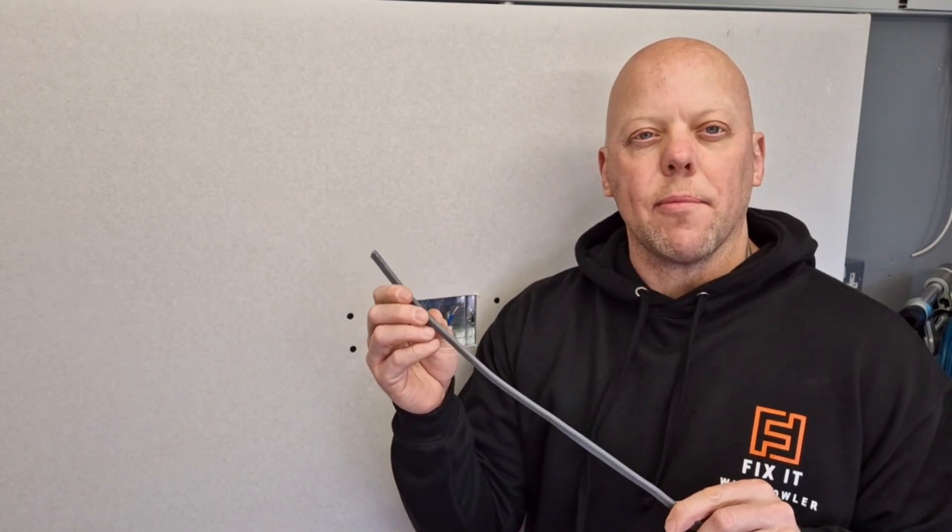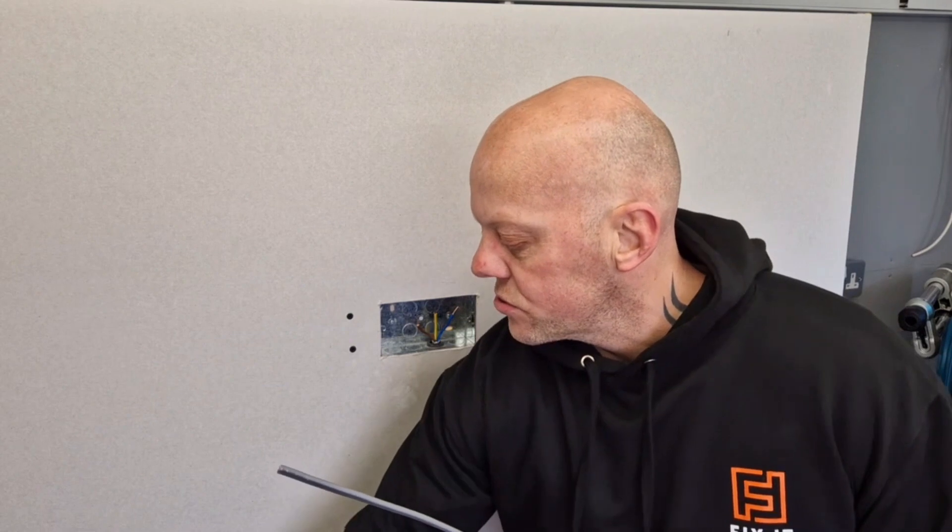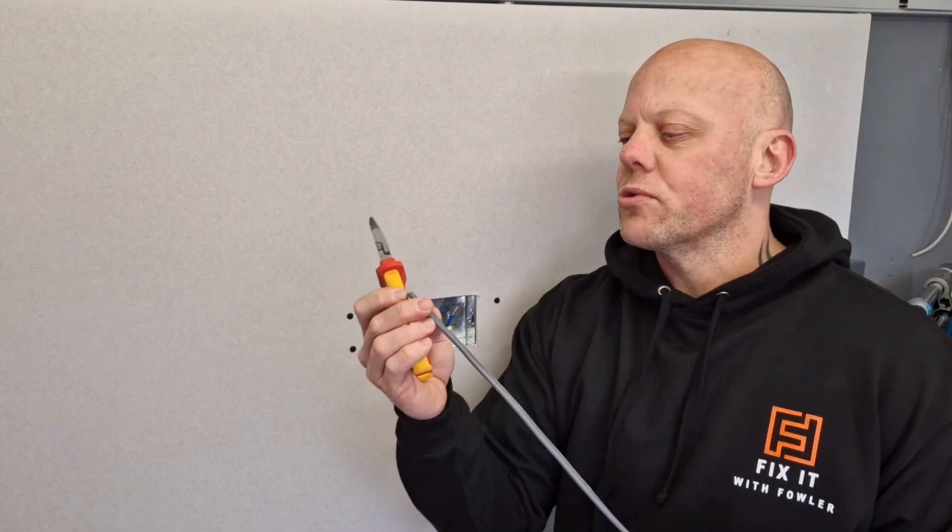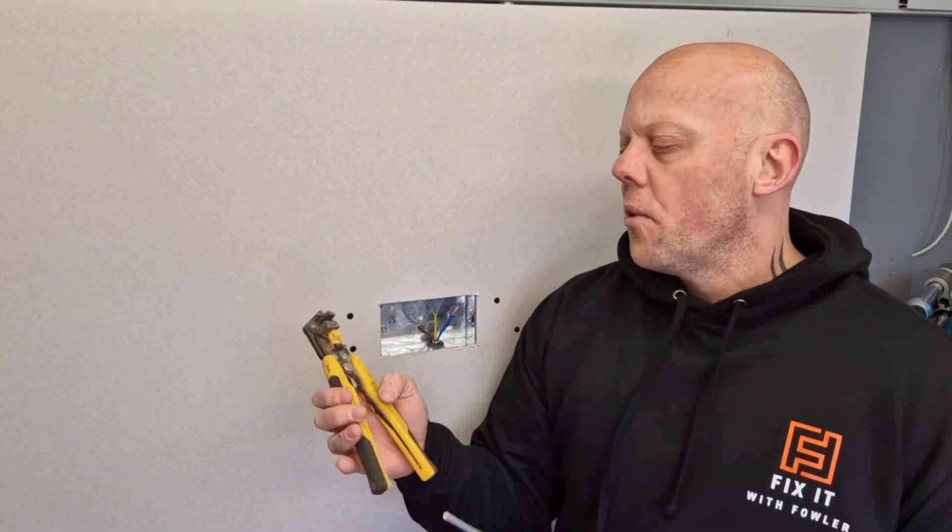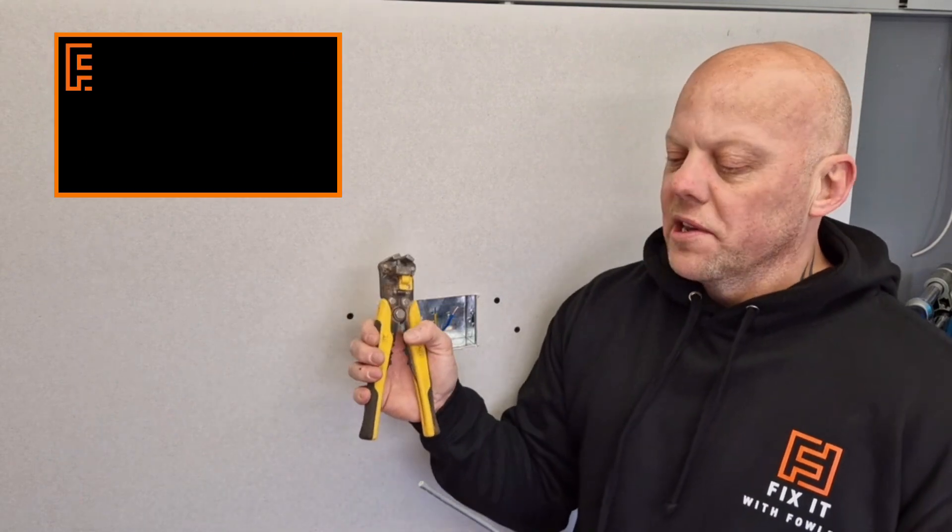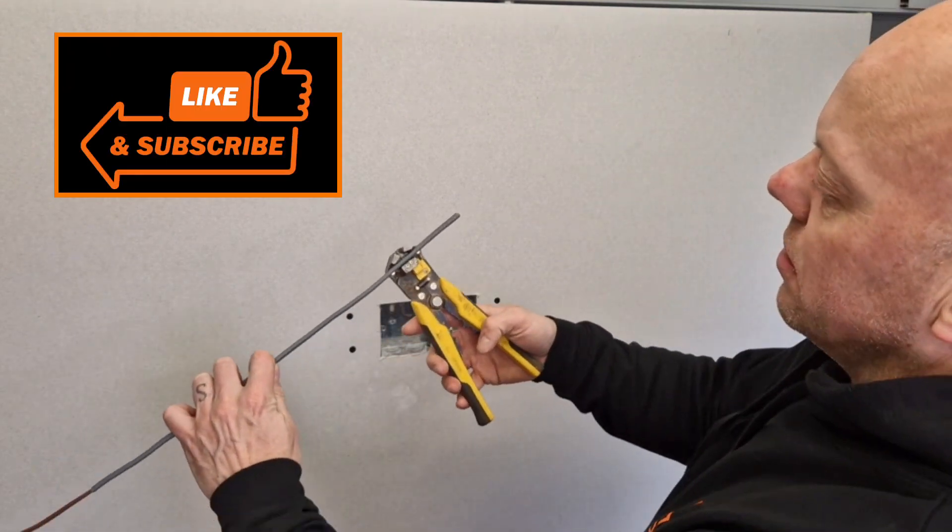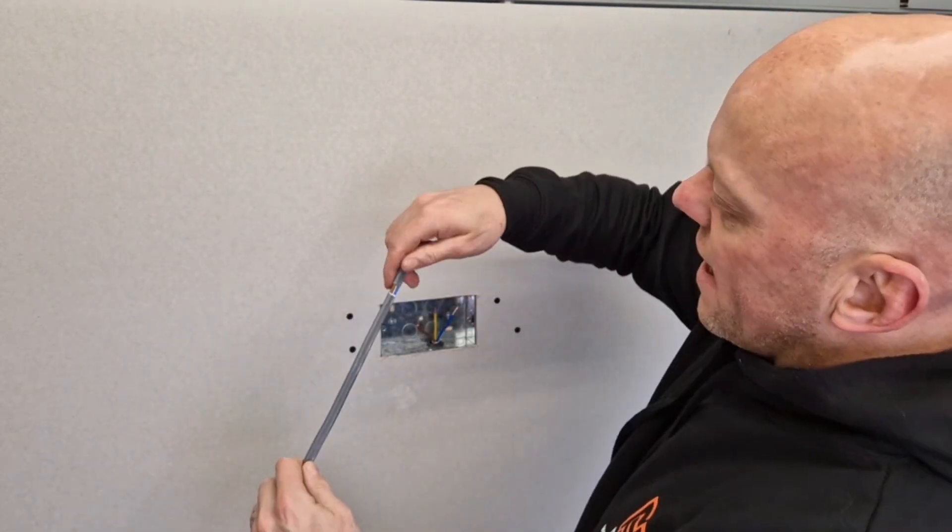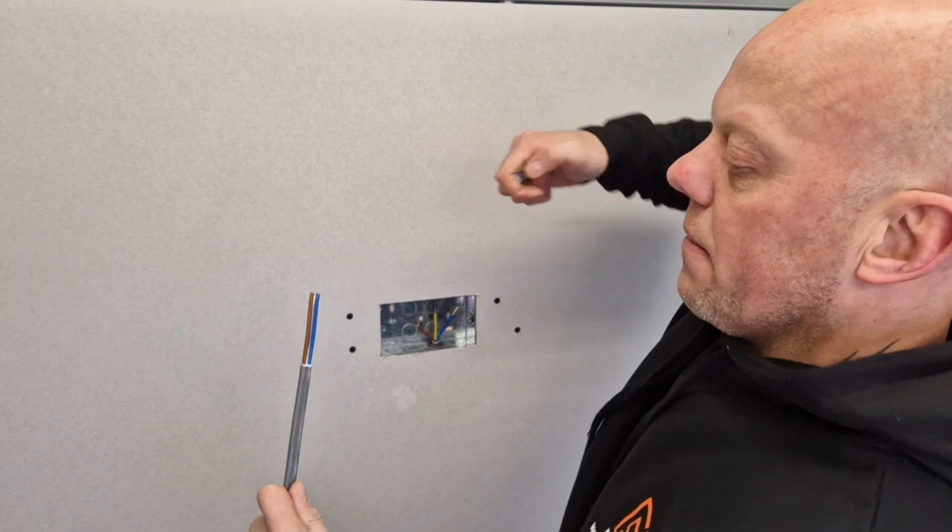The first thing we're going to need to do is get yourself an offcut of 2.5 twin and earth cable. Now there's a few methods you can use to strip this cable - you can use traditional side cutters and trim down the edge, pull the earth and that will strip the earth. However, for a DIYer, these are brilliant bits of kit and you can just get them, put them onto the twin and earth, press it, and that allows you to pull that off and gives you your offcuts of cable.